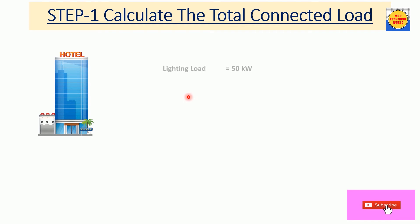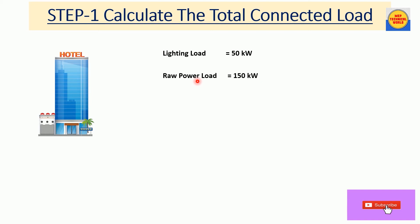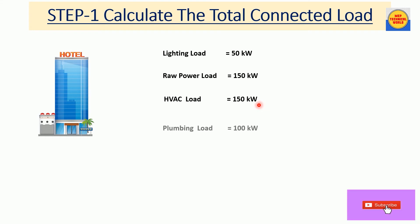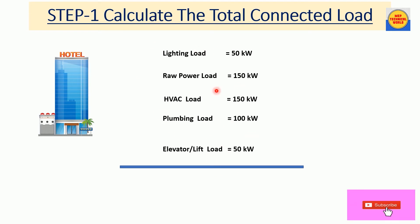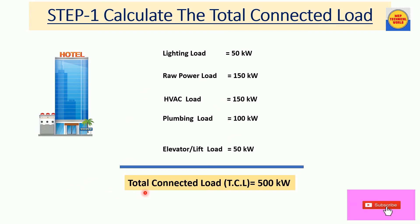The loads considered are: lighting load 50 kW, raw power load 150 kW, HVAC load 150 kW, plumbing load 100 kW, and elevator load 50 kW. Adding all these loads, the total connected load is 500 kW.